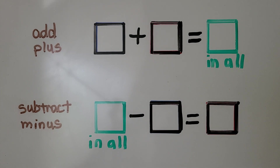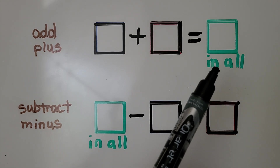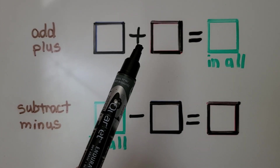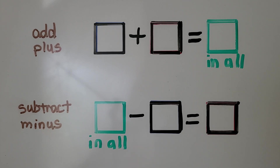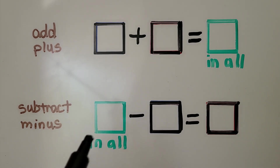In addition, when we add, we put numbers together. The number in all is on the right side of the equation. We know it has a plus sign because we're adding. In subtraction, when we take a number apart or some go away, it has a minus sign and the number in all is on the left — it's the first number.